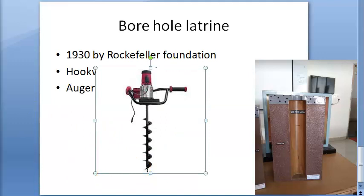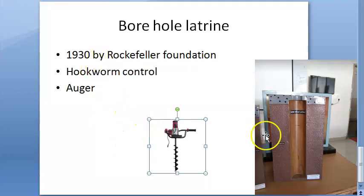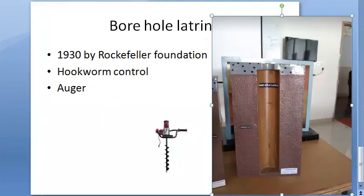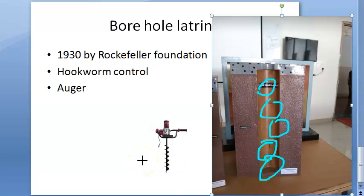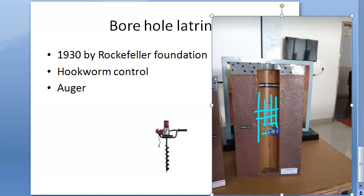The auger is used to dig vertically. In loose and sandy soils, the hole is lined with bamboo matting or earthenware rings to prevent caving in of the soil. This is very important because people are sitting over this large hole — the soil must not cave in. So they use bamboo matting or earthenware rings, especially in loose and sandy soils.